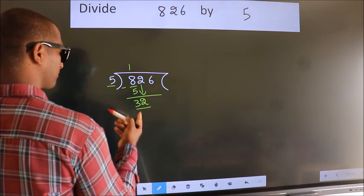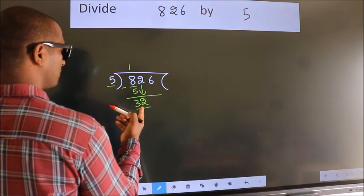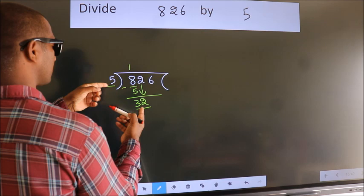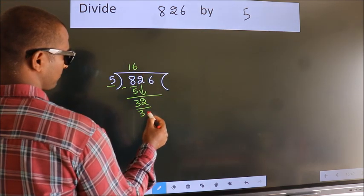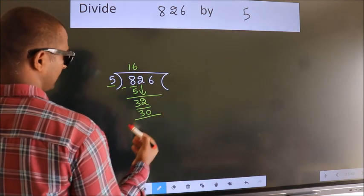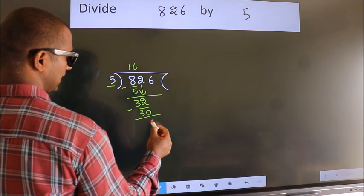So 32. A number close to 32 in the 5 table is 5 times 6, 30. Now we subtract, we get 2.